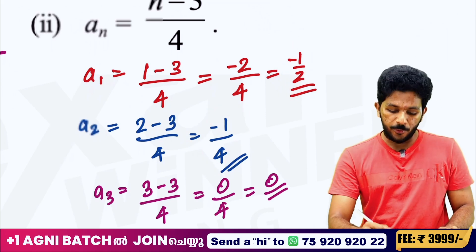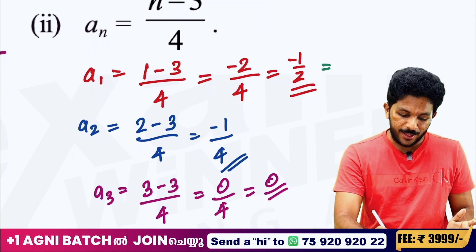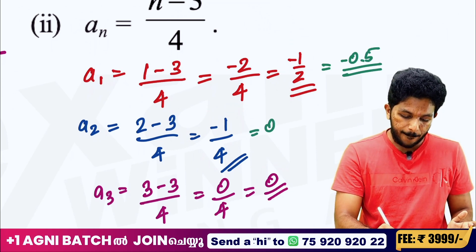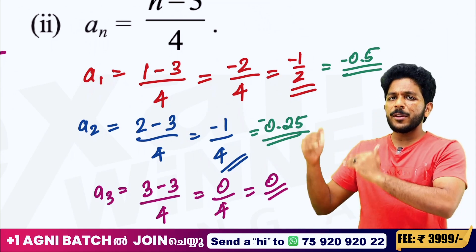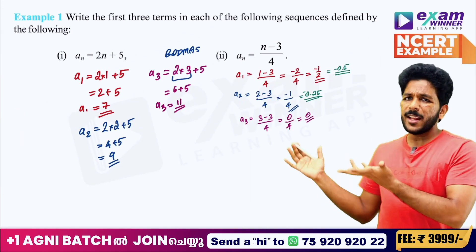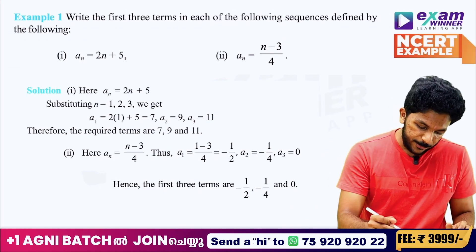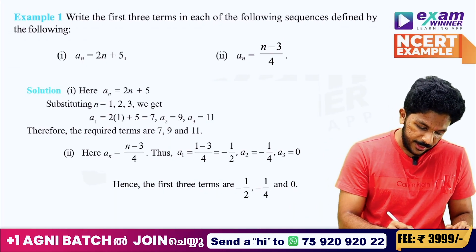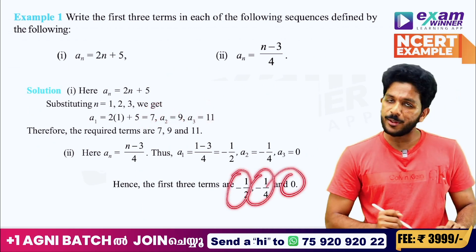Minus 1 by 4. Now we do the math: minus 3 by 4, minus 1 by 4, then 0. If you have 0.25 — if you have an answer in the textbook, it is 7, 9, 11. That's right — minus 1 by 2, minus 1 by 4, and 0.